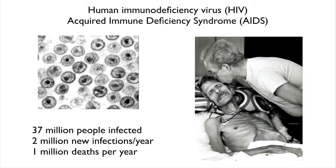Poliovirus is largely a thing of the past. This is a virus that currently kills the most people in the world: human immunodeficiency virus, which causes AIDS. This virus infects cells of the immune system, kills those cells, and strongly impairs our ability to mount immune responses, so infections we would normally fight off become life-threatening. Currently in the world there are 37 million people infected with HIV, and about 2 million people get infected every year. We have very good medicines to treat this virus, but we simply don't have the ability or the will to get those medicines to everybody who needs it. About 1 million people die from this virus every year.